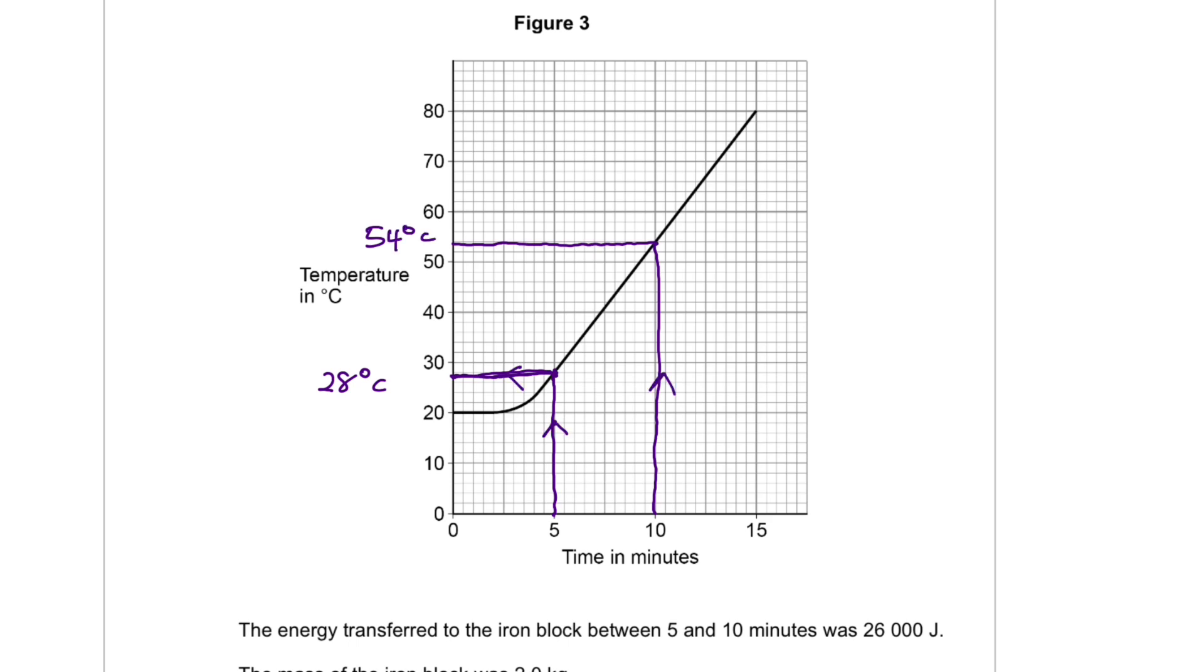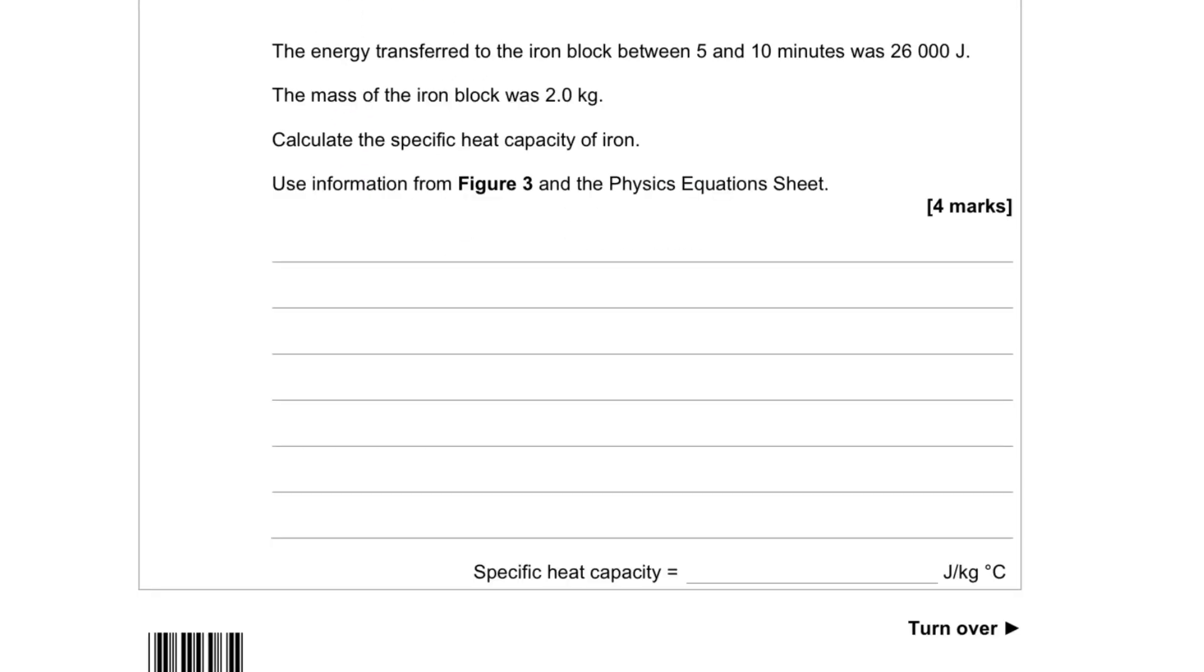And then we want to use that in our calculation. So we need to write down the difference in temperature. Delta theta will be theta 2 minus theta 1. We know what theta 2 is. That's 54 minus 28. And that equals 26 degrees Celsius.